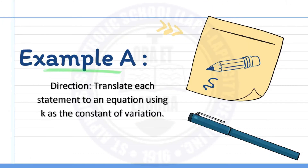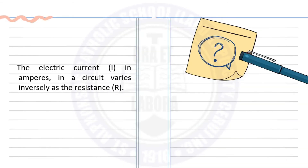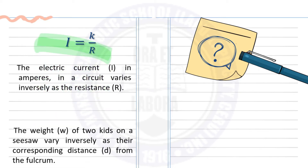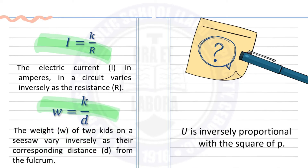In inverse variation, y varies inversely as x means y equals k over x, where k is the constant of variation. Example A — translate each statement to an equation. Number 1: the electric current in amperes varies inversely as the resistance, so I equals k over R. Number 2: the weight of two kids on a seesaw varies inversely as their corresponding distance from the fulcrum, so W equals k over D. Number 3: U is inversely proportional to the square of P, so U equals k over P squared.